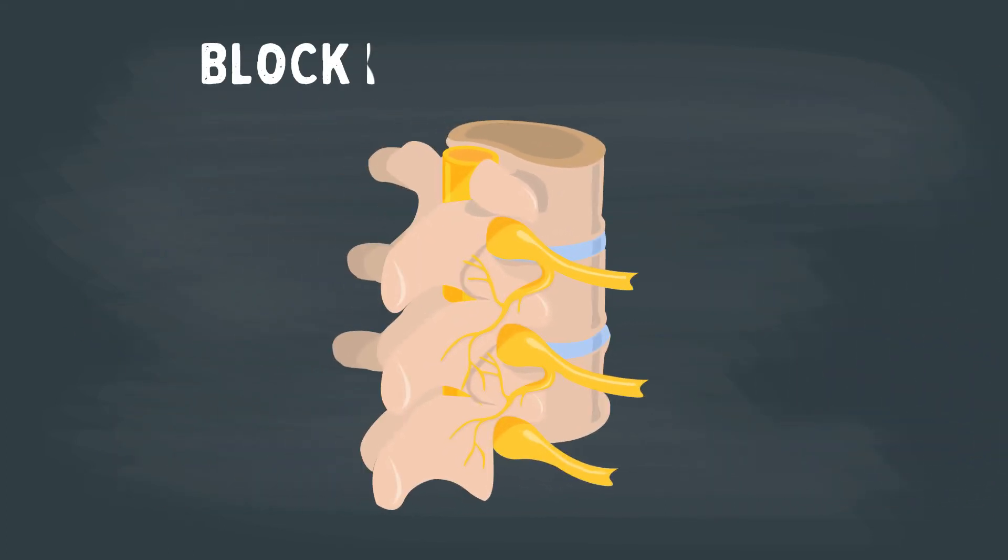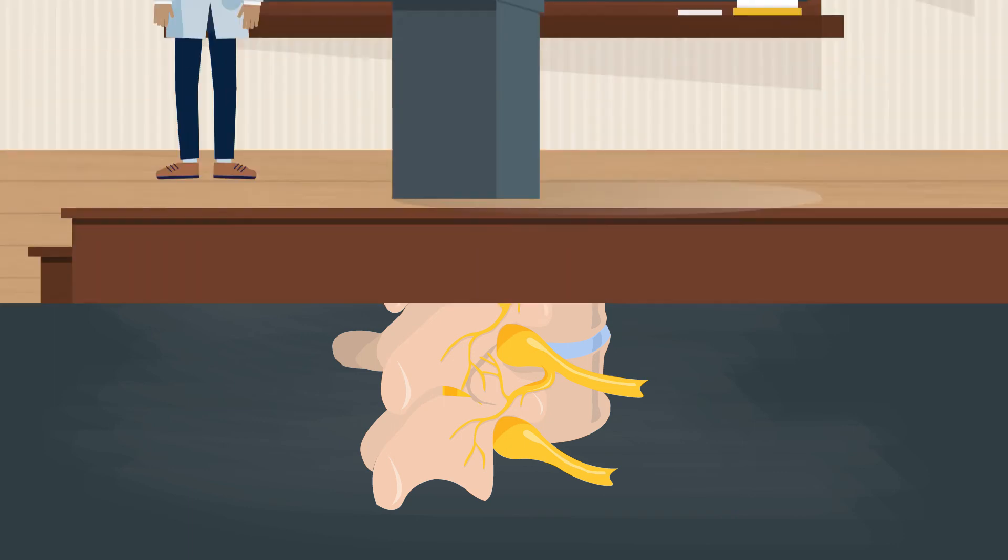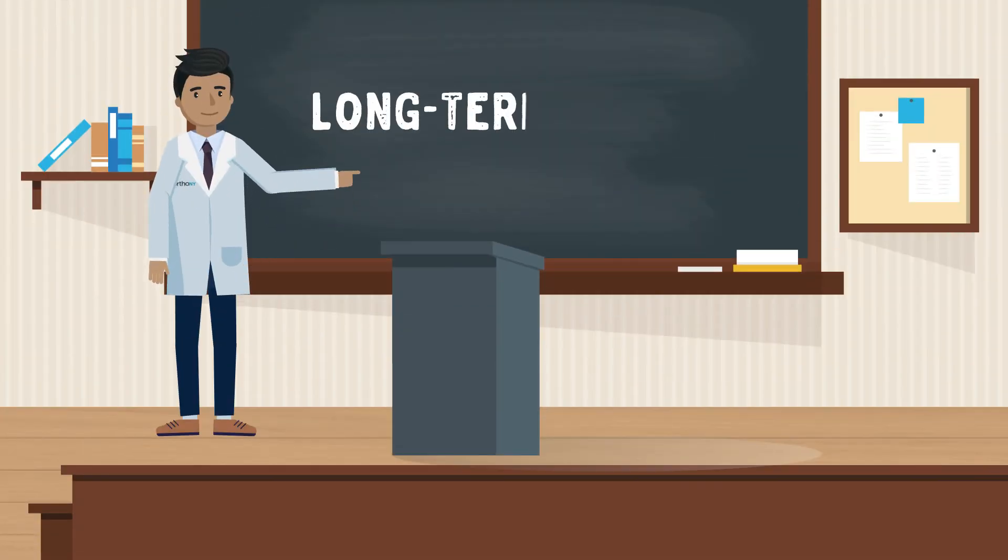This block is performed twice to make sure we've got our target. Why twice? Well, because we're perfectionists. Okay, fine, the insurance company makes us.